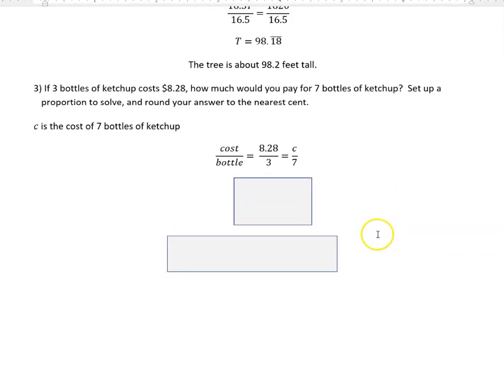In the second example, if three bottles of ketchup cost eight dollars and 28 cents, how much would you pay for seven bottles of ketchup? Set up a proportion to solve. I'm going to use C as my unknown, and that is the cost of seven bottles of ketchup.